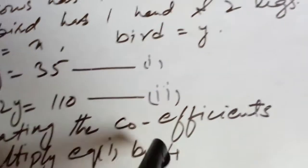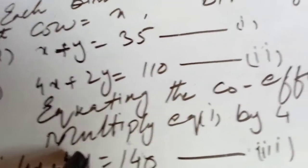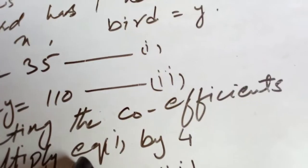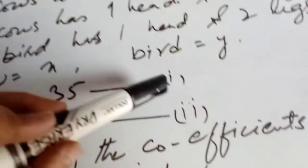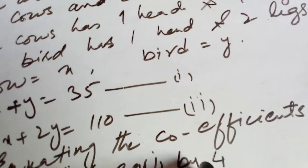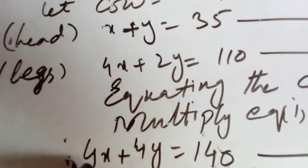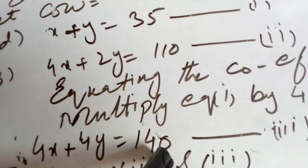Equating the coefficients — we will multiply equation 1 by 4. This gives us 4x plus 4y is equal to 140. This is our equation 3.